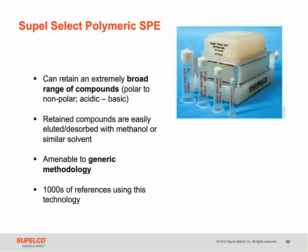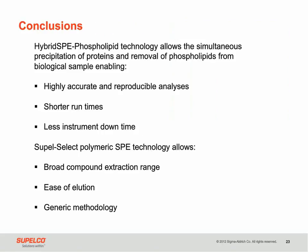In conclusion, hybrid SPE phospholipid technology allows the simultaneous precipitation of proteins and removal of phospholipids from biological matrices. This enables highly accurate and reproducible analyses, shorter run times, and less downtime due to cleaning gradients. Using polymeric SPE phases enables the application of generic extraction methods and simple elution procedures to a broad range of organic compounds in aqueous matrices. Thank you, and I'll turn it back over to Trevor.